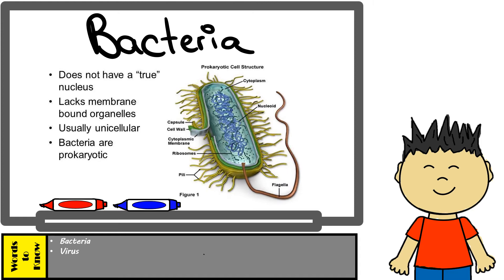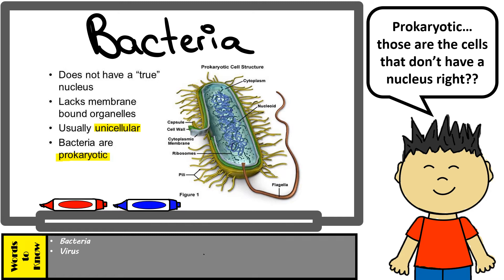Bacteria are living organisms made up of unicellular prokaryotic cells. Prokaryotic cells lack a nucleus and also lack membrane-bound organelles. They're very simple — their nucleic acids float around in their cytoplasm along with ribosomes, all contained within a cell membrane surrounded by a peptidoglycan cell wall, enclosed in a capsule.